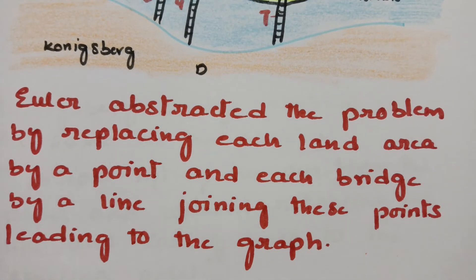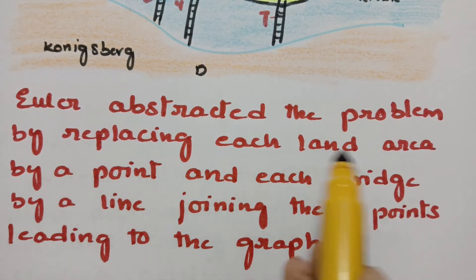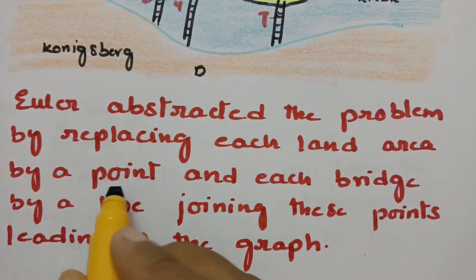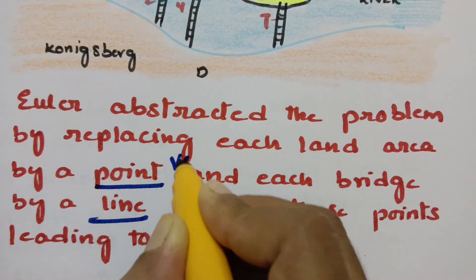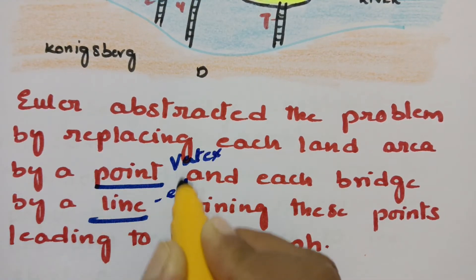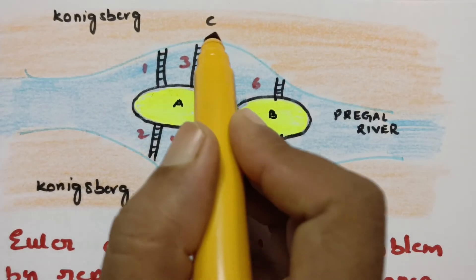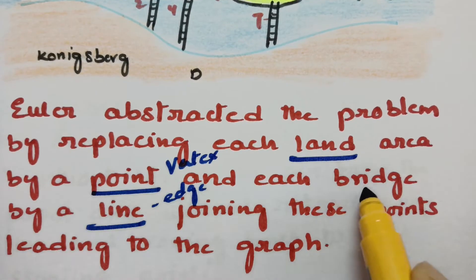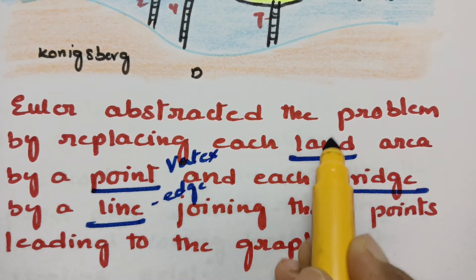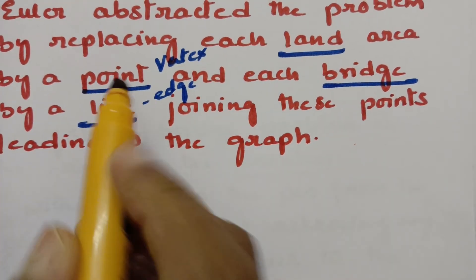Graph theory is used to analyze this problem, but the solution is impossible. Euler abstracted the problem by replacing each land area with a point (vertex) and each bridge with a line (edge), joining these points and leading to a graph. So: land area → vertex, bridge → edge.